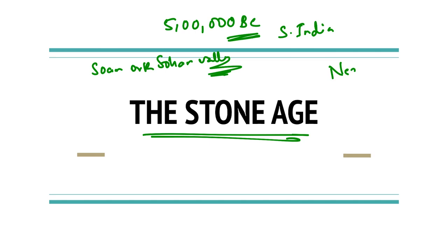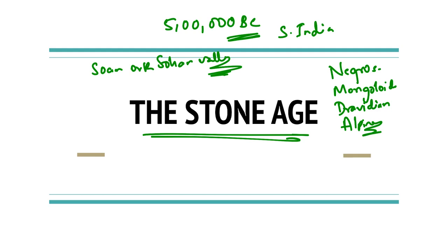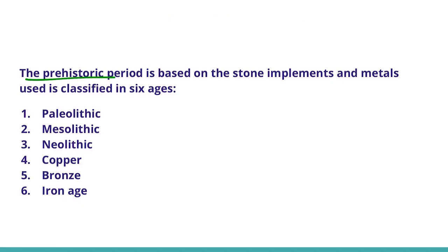The existence of various races like Negroes, Mongolites, Dravidians, Alpines, and so on complicates the issue of the origin of man. The present population of India is a result of intermixing of many races, but the most acceptable view is that the Deccan was the first home of man. The prehistoric period is based on the stone implements and the metals used by man.